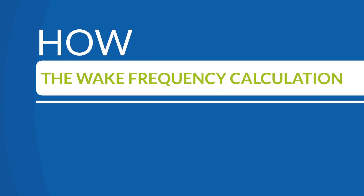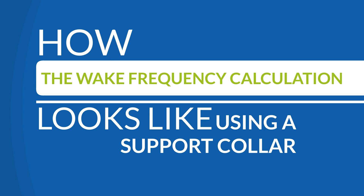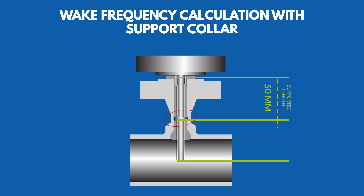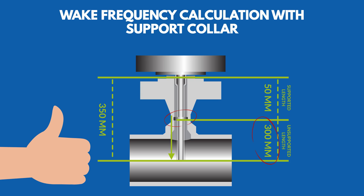Let's see how the wake frequency calculation looks using a support collar. A support collar is set at 50 mm away from the flange of the DBB valve. This portion is now considered as the supported length. The portion below, with a width of 300 mm, is considered as the unsupported length. The calculation starts from the support collar onwards to the end of the probe. Having an unsupported length of probe at 300 mm, it is now within the recommendation for the wake frequency, and the overall length of the probe of 350 mm can be used as required.